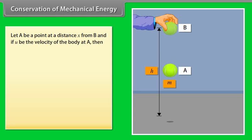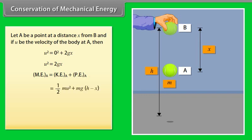Let a be a point at a distance x from b, and if u be the velocity of the body at a, then u square equals 2gx. Mechanical energy of the body at a is equal to kinetic energy of the body at a plus potential energy of a body at a. By calculating it, we get the mechanical energy of the body at a is mgh.